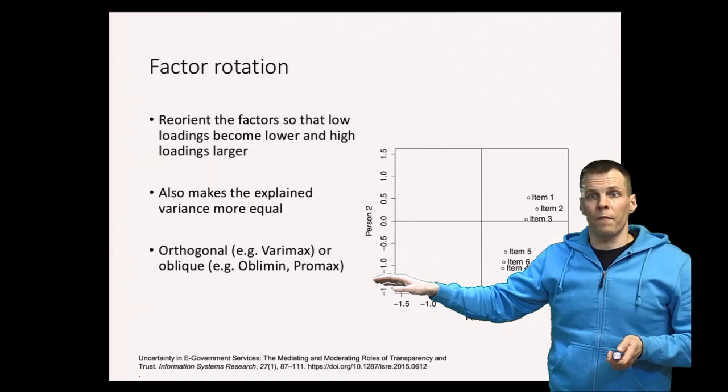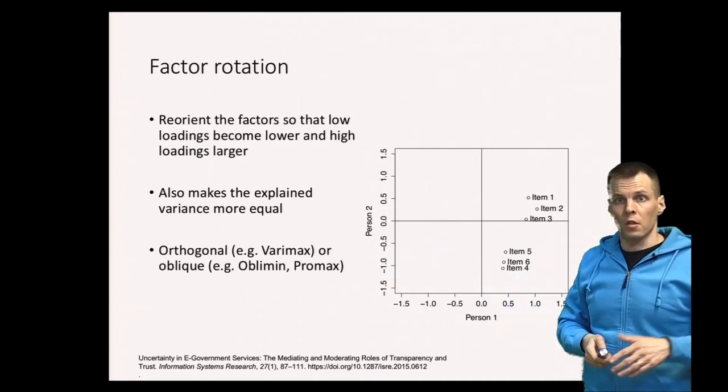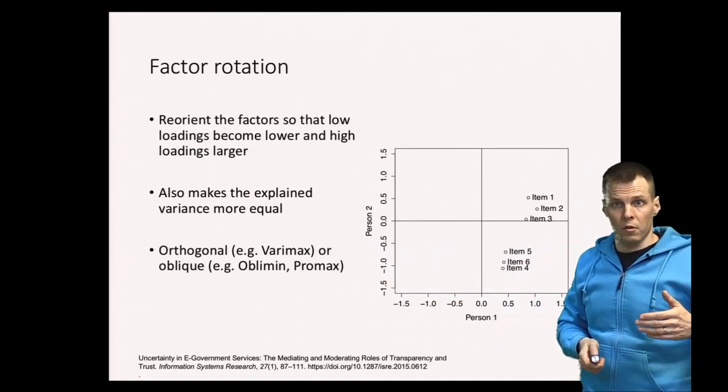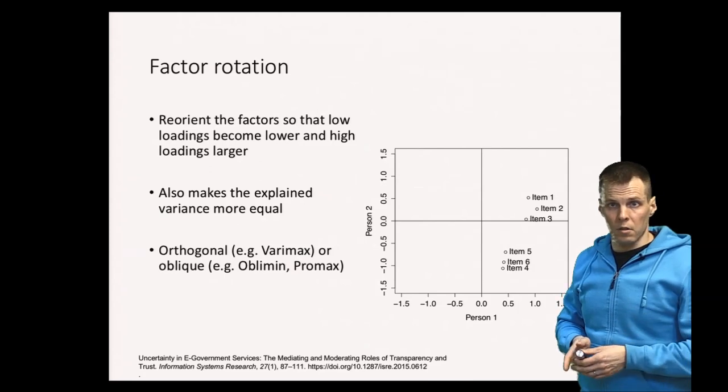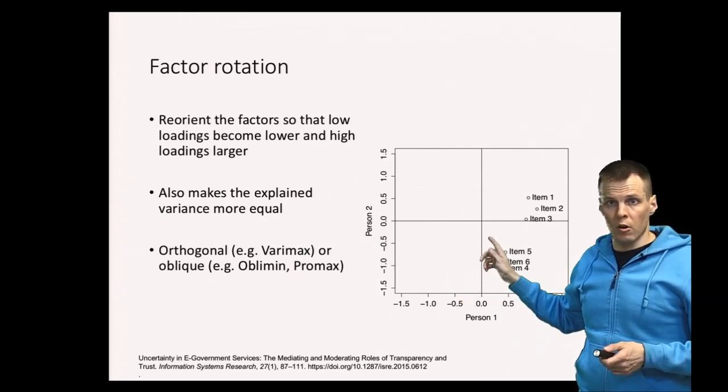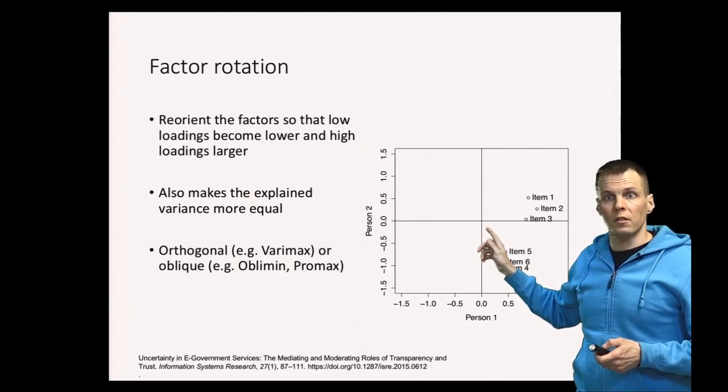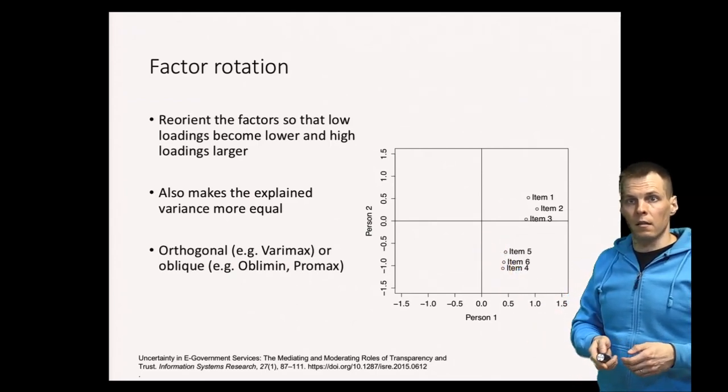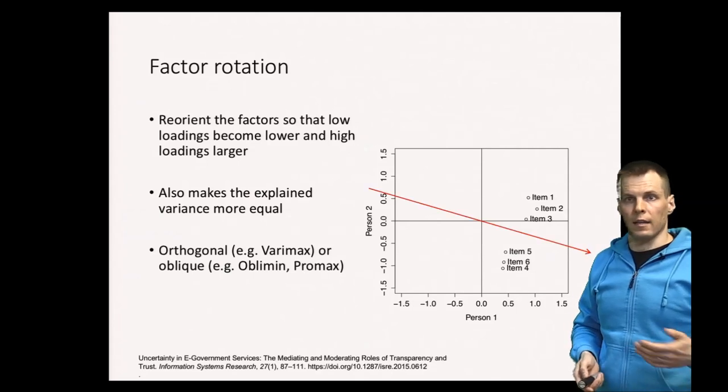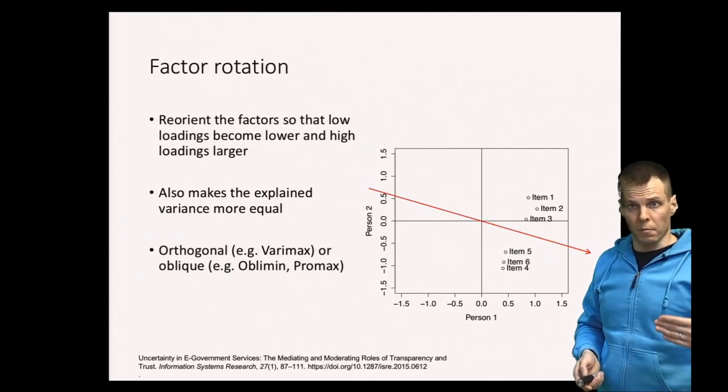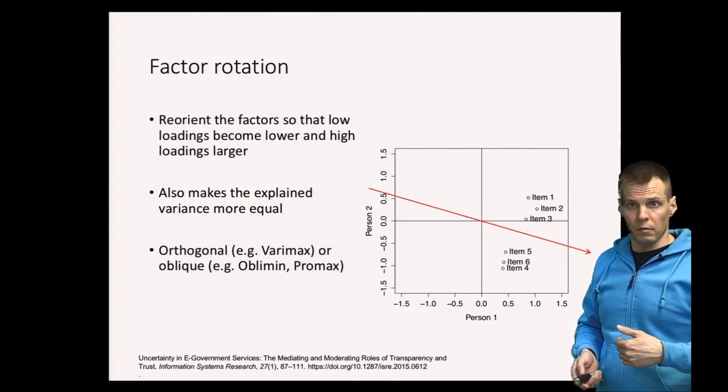And when we do a factor analysis, first we extract the first factor. The factor analysis starts from the origin here and it asks the question to which direction the data are. And it'll indicate that all the data are to that direction here. So all the data are to the right and down a bit.